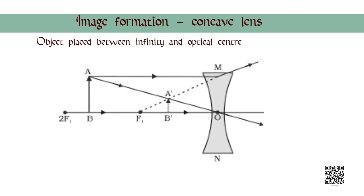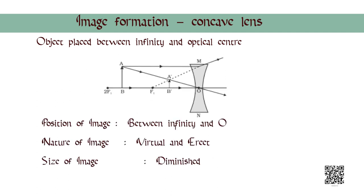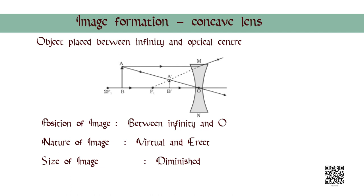Moving towards the case when the object is placed anywhere between infinity and the optical center of the lens, we shall consider two rays for image formation. The first ray, incident parallel to the principal axis, shall appear to pass through focus F1, while the other ray passing through the optical center shall move undeviated. The apparent intersection of the two light rays forms a virtual, erect and diminished image.